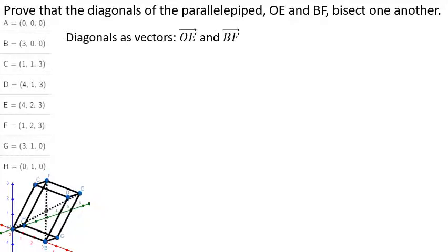Here's how we begin. Start by identifying the vectors that correspond to the diagonals OE and BF. So I'm imagining a vector that takes me from O the origin to E. That's the diagonal that goes from the front left bottom corner in our picture to the top right back corner. And then BF goes from the front bottom right corner to the top left back corner.